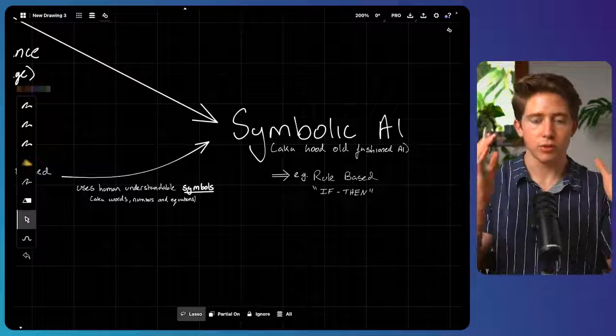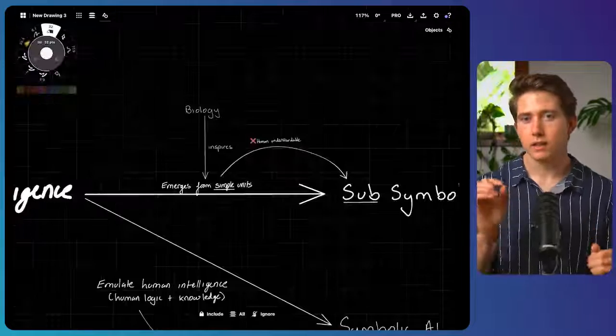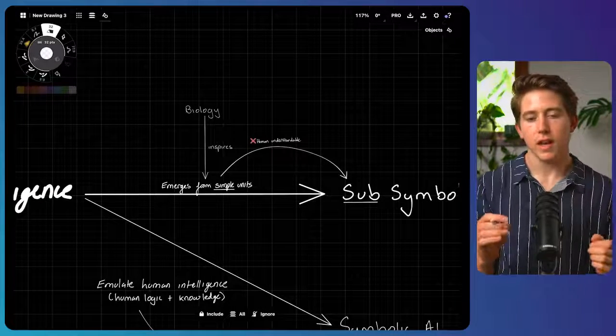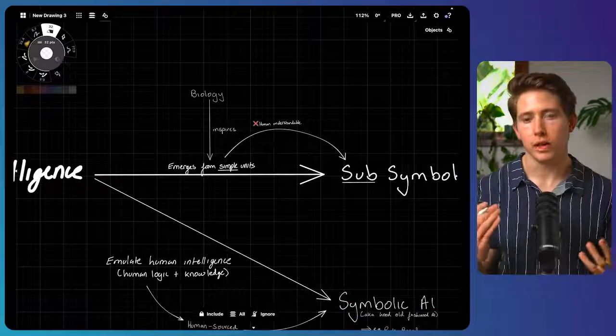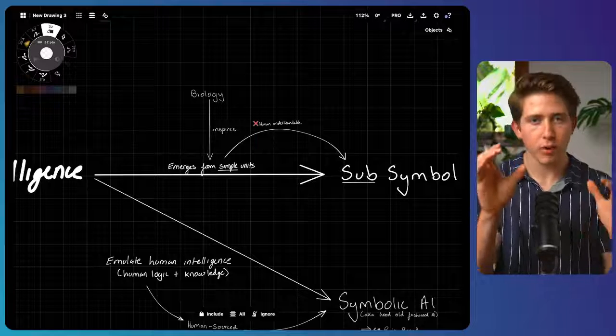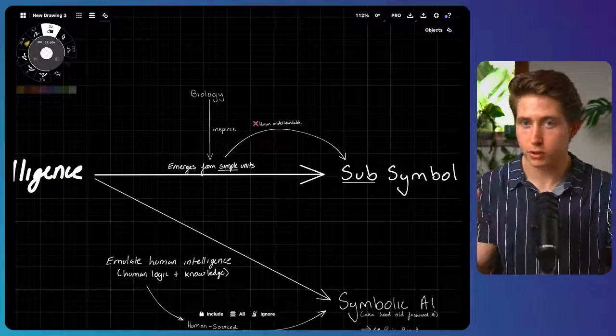The second kind of AI is one that is a little bit more interesting. And instead of trying to emulate human intelligence, it tries to emerge intelligence from the interaction or combination of very, very simple subunits.